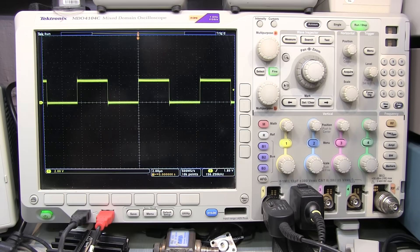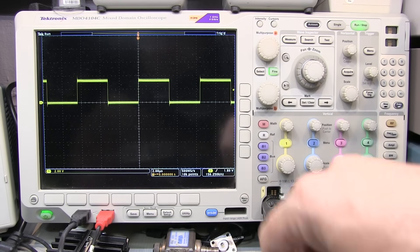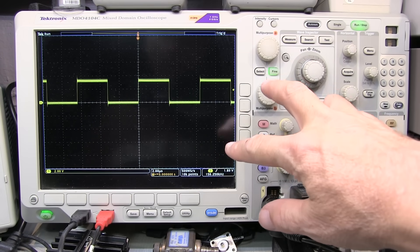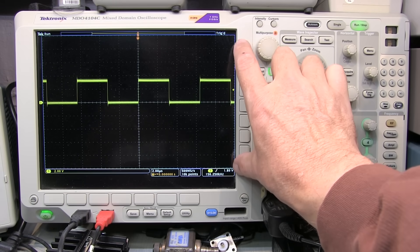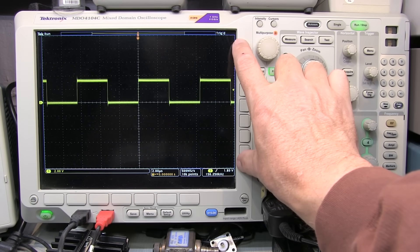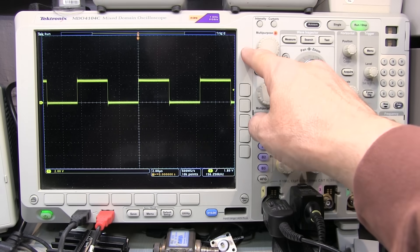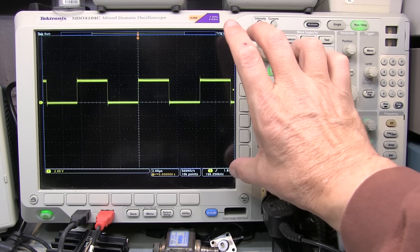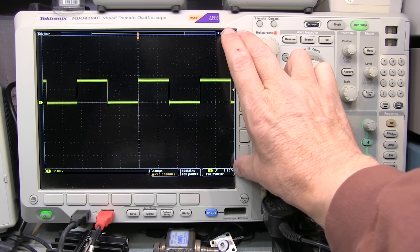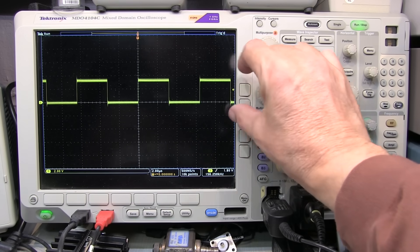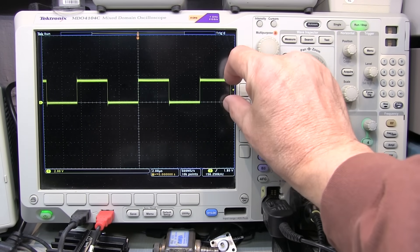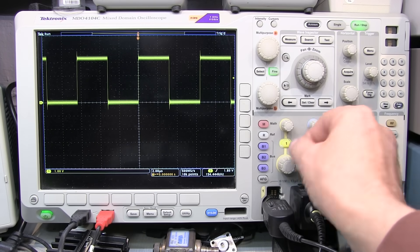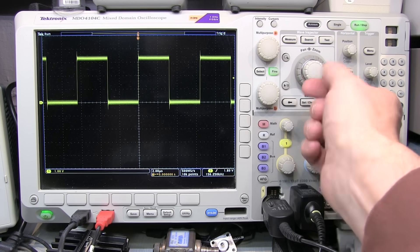These next set of tips have to do with optimizing the vertical aspects of the scope. First and foremost, especially for digital scopes, you really want your signal to occupy as much of the full-scale graticule as possible. Because whether it's an 8-bit scope like this or a 12-bit scope or whatever, that ADC is optimized to capture full-range signals. If you adjust your vertical scale so the signal is only occupying a division or two, you're not taking best advantage of the full resolution of the ADC. So you really want to adjust that as full-scale as possible.